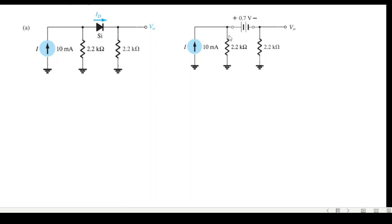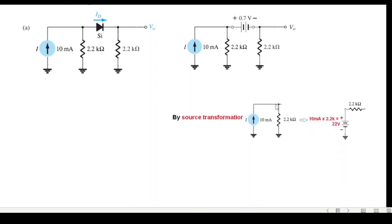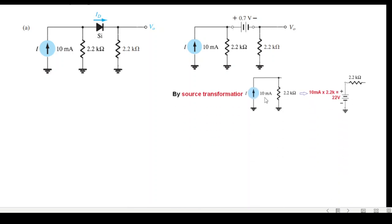The best technique is to use source transformation. A current source in parallel with a resistance can be rewritten as a voltage source in series with the resistance. The voltage source value equals current multiplied by resistance, giving 22V, with the same series resistance.